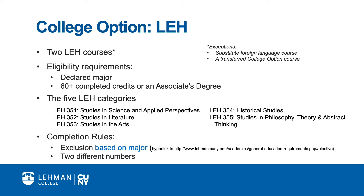There are five different categories of LEH courses corresponding to different areas of the curriculum. Here you see the categories and the numbers that represent each of them. There are two important rules that govern how the LEH requirements must be completed. First, students are excluded from enrolling in one of the five LEH categories based on their major. For example, a psychology major cannot enroll in LEH 351. Please refer to Lehman's Academics website linked here for details.